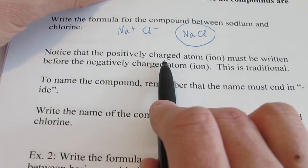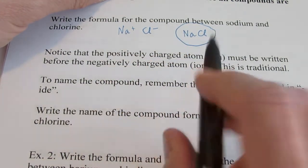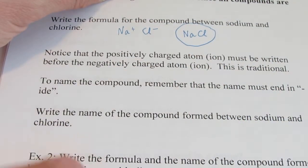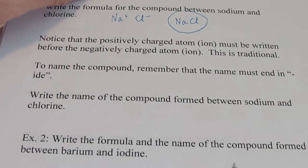Now, we always put the positively charged ion first. So Na comes before Cl. So we don't write it as ClNa like some of you will do. That's wrong. This is simply tradition.